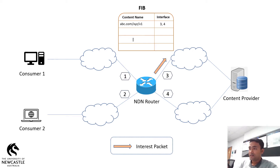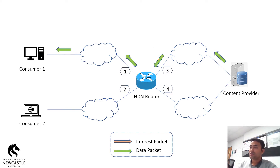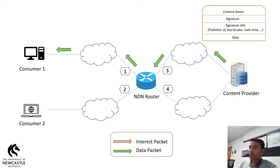This forwarding is done based on another table called Forwarding Information Base, or FIB in short. The FIB contains the routing information. Once the interest packet arrives at the content provider, it generates the content and sends it back to the consumer. The data packets follow the reverse path of the interest packet. The format of the data packet is something like this: the first field contains the content name, then signature, then signature information, followed by the actual data.